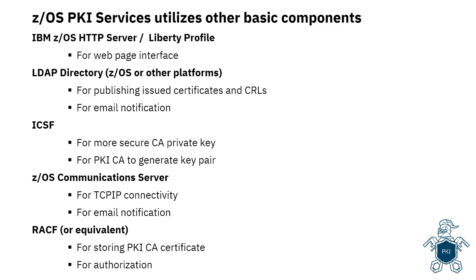z/OS PKI services utilizes other components, most of them at no extra charge. Like HTTP server or Liberty profile for the web page interface; LDAP directory for publishing the certificates and the CRLs; ICSF for more secure CA private key and for RACF to generate the key pair; Communication server for TCP/IP connectivity and for email notification; and RACF for storing the PKI CA certificate and for authorization.